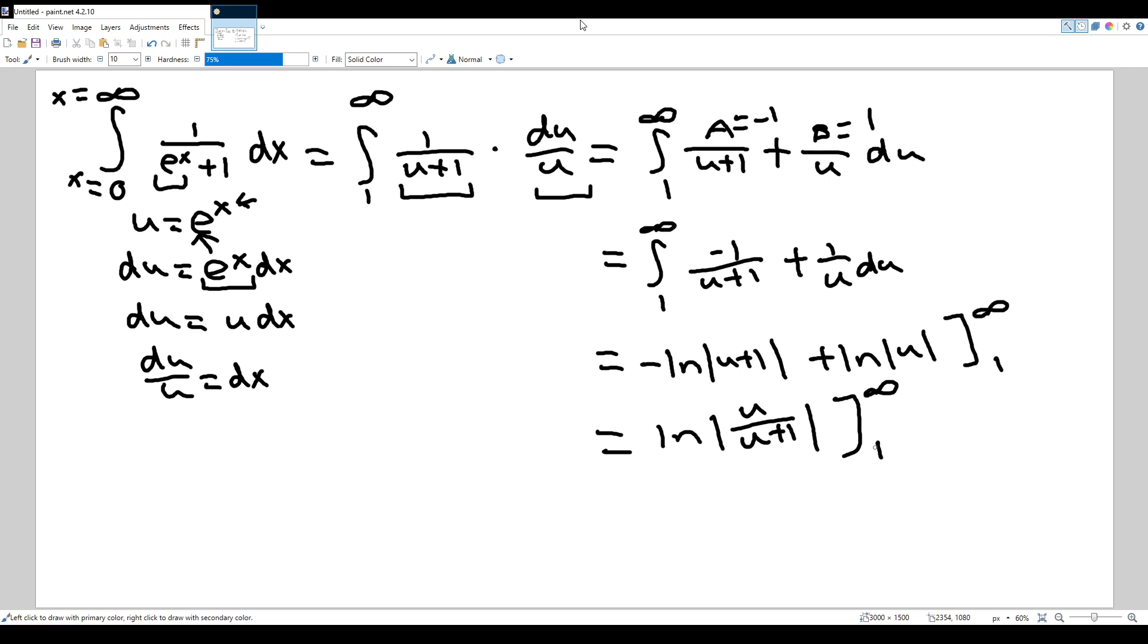Same thing for our bounds. And when you plug in infinity into u, if you take the limit as u approaches infinity, the natural log of u over (u + 1) is the same thing as natural log of 1. So natural log of 1 is just 0. So 0 minus, when you plug in 1 into here, so natural log of 1 over (1 + 1), which is the same thing as natural log of 1/2. And another logarithm fact: you can bring the negative sign inside the parenthesis, which means this is the same thing as natural log of 1/2 raised to the negative 1. And the negative 1 is just from the negative sign. And then finally, when we simplify this thing, our final answer is just natural log of 2.